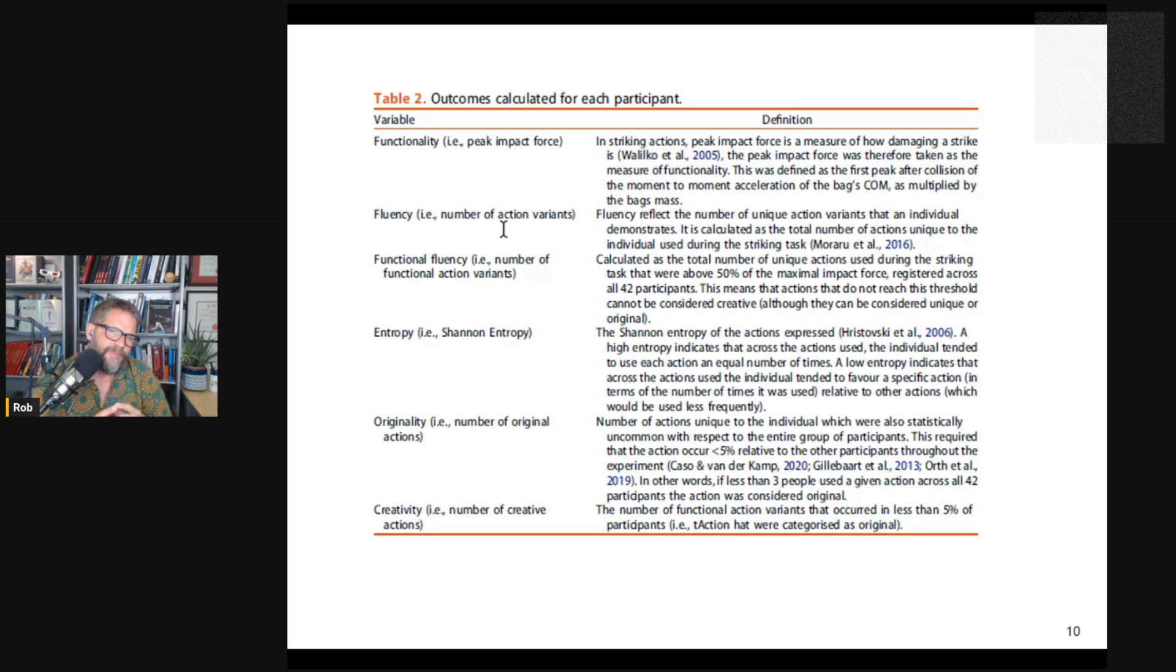Entropy is a measure—I've talked about this a few times on the podcast. Entropy is a measure of predictability. High entropy means unpredictability. You can't predict what happened from what happened before. Low entropy means you can predict what happened. So it means they're using the same thing over and over again. It's a measure of how much they're changing their solution. Originality: what they did was look across the entire group and they quantified something as original as something that occurred in less than 5%—less than 5% of the people in the study used that move. And creativity—this is the same work that Dominic's done before in his studies—a creative action is both original and functional. So it's used very rarely by less than 5% of the group, but it also has high force. So it's not just some random thing that doesn't achieve your goal. So these are the things they're looking at.